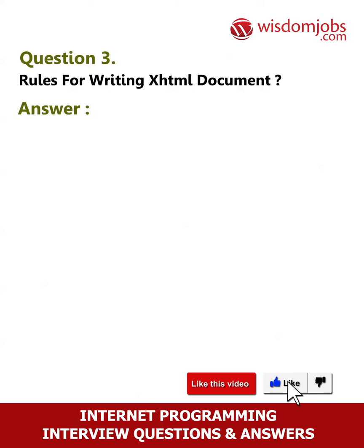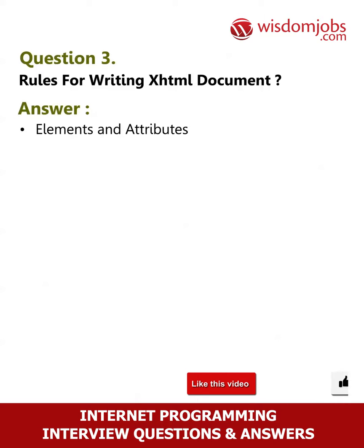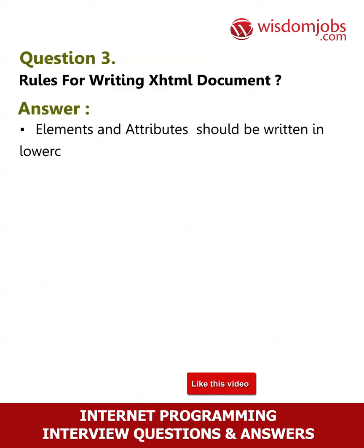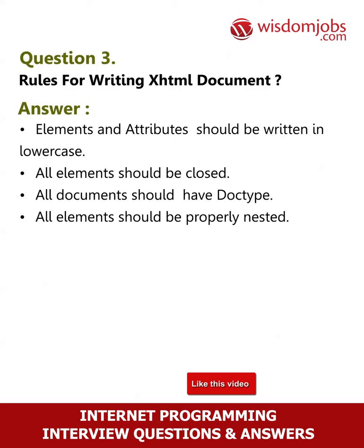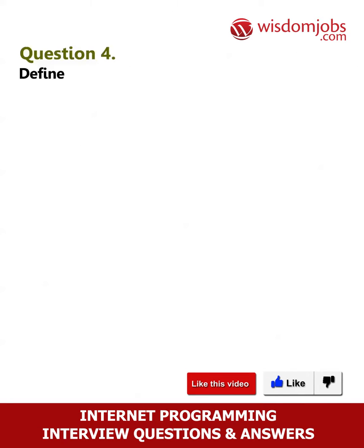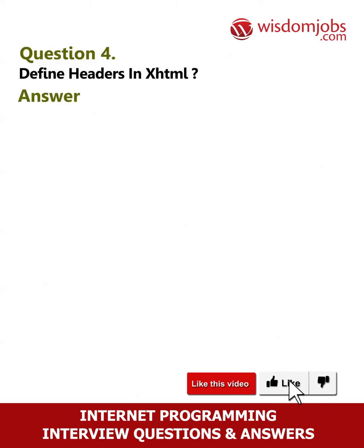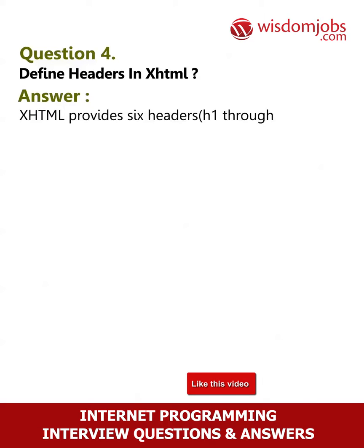Normally, such formatting is specified with Cascading Style Sheets. Question 3: Rules for writing an XHTML document. Answer: Elements and attributes should be written in lowercase. All elements should be closed. All documents should have a DOCTYPE declaration. All elements should be properly nested.